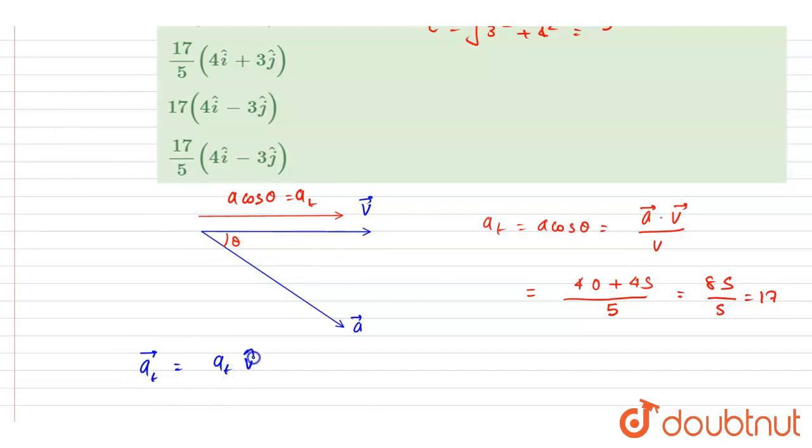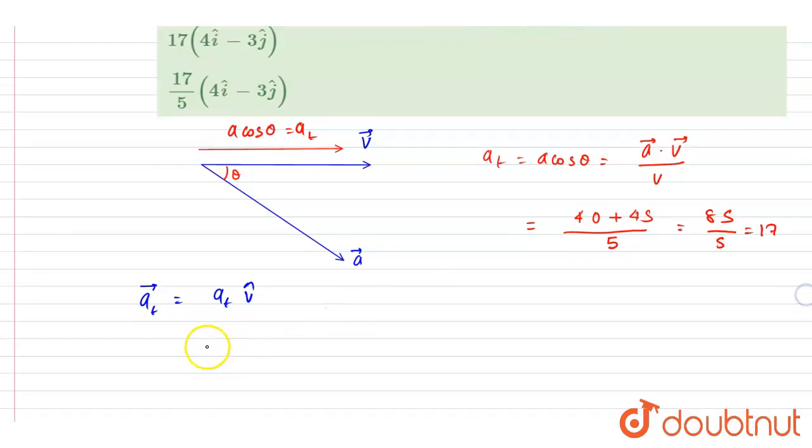17 v cap. So you can write down the v cap. The magnitude v is already calculated. And if I write it down, it will be v by magnitude of v.